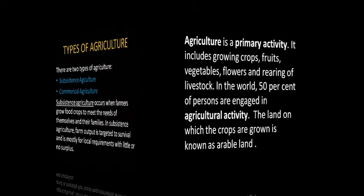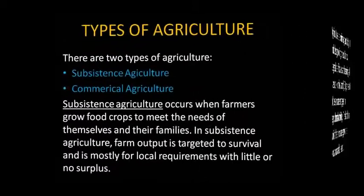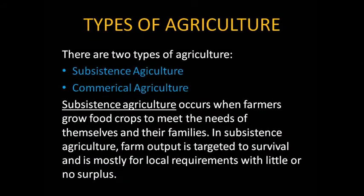Types of agriculture. There are two types of agriculture: subsistence agriculture and commercial agriculture. Subsistence agriculture occurs when farmers grow food crops to meet the needs of themselves and their families. In subsistence agriculture, farm output is targeted to survival and is mostly for local requirements with little or no surplus.